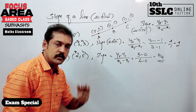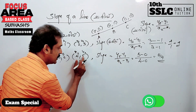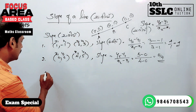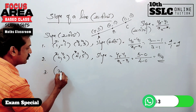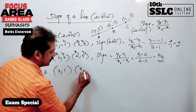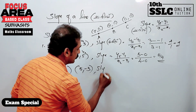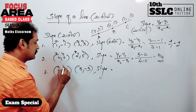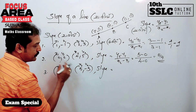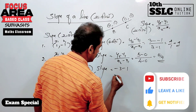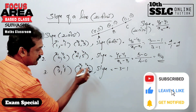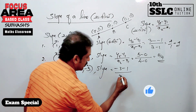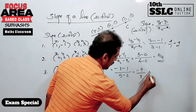The answer is 5 over 4. Number three: the points are (2, 1) and (5, -3). We assign x1, y1 as (2, 1) and x2, y2 as (5, -3). Then slope is equal to y2 minus y1 by x2 minus x1. That is: -3 minus 1 by 5 minus 2. The answer is -4 by 3.